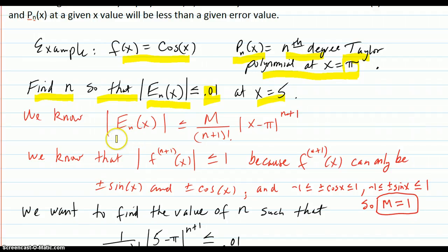We know that the error term or the error is less than this. And we know that the n plus 1 derivative of f everywhere for this function is less than or equal to 1 because all these derivatives are only going to be plus or minus sine or plus or minus cosine.